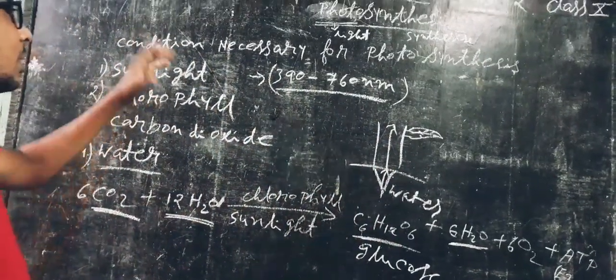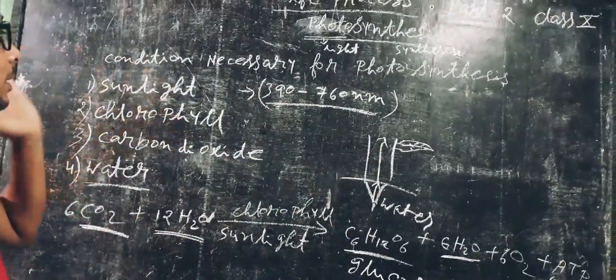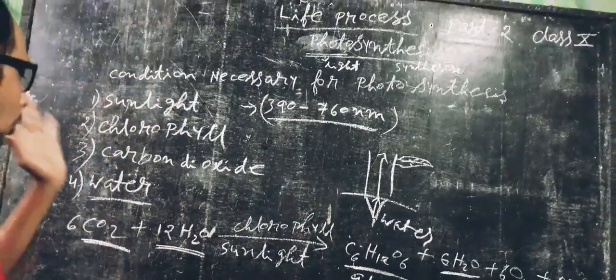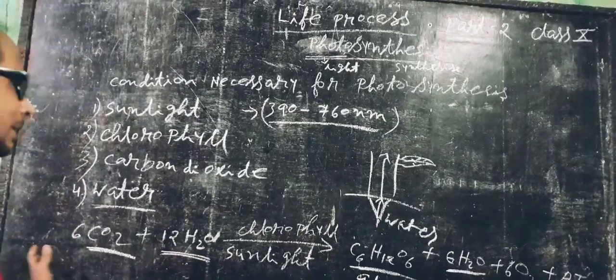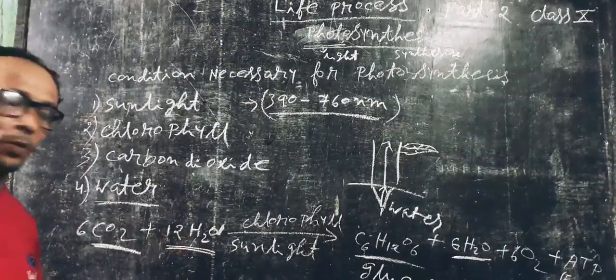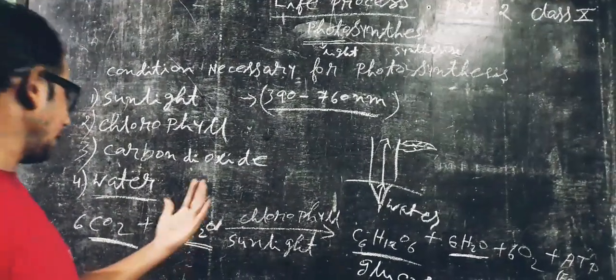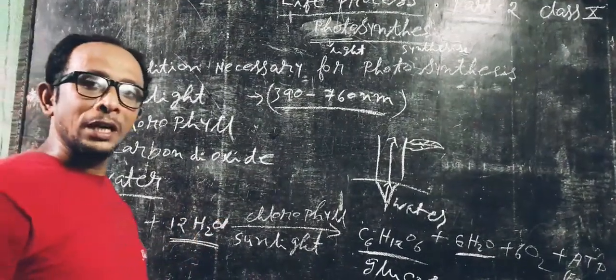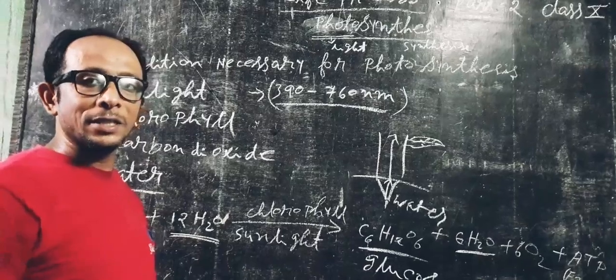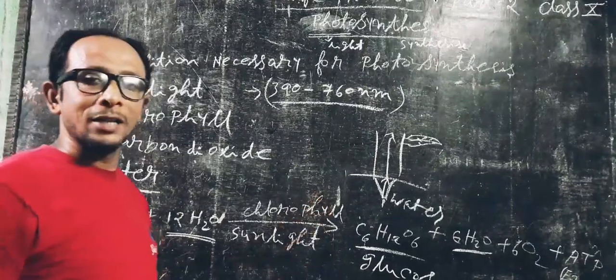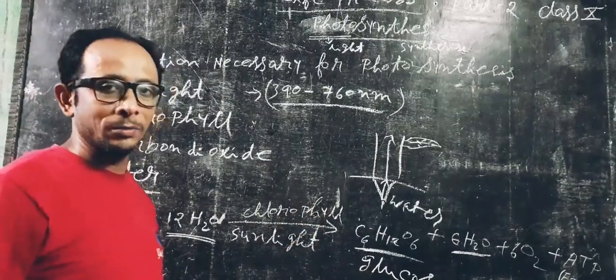So these are the conditions needed for photosynthesis and the chemical equation. We will discuss the next topic next time, which is the light and dark phase. Thank you very much.